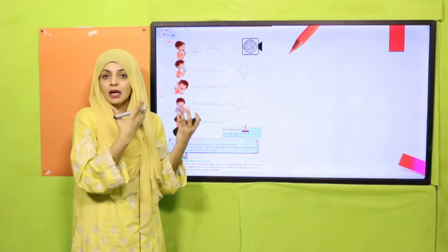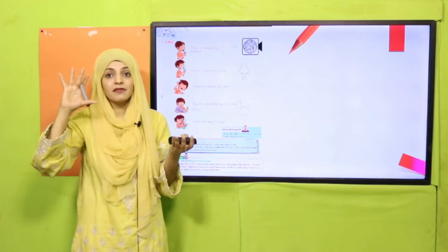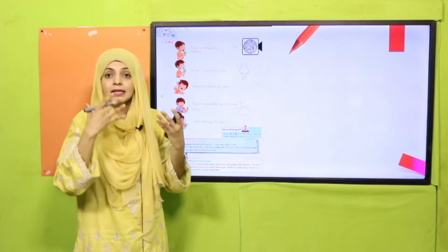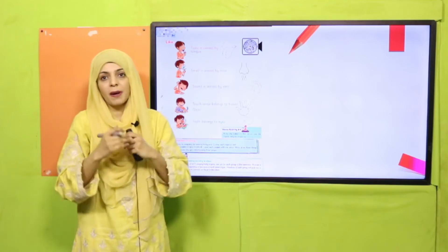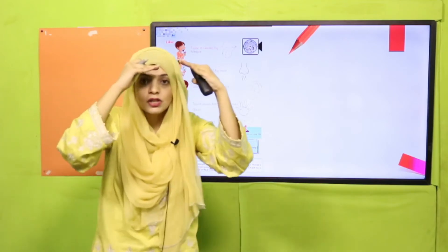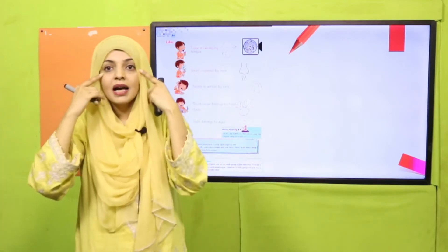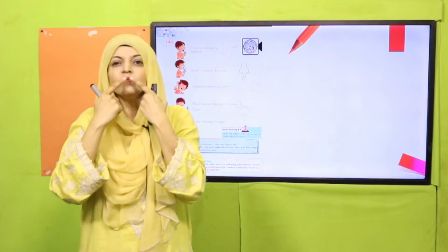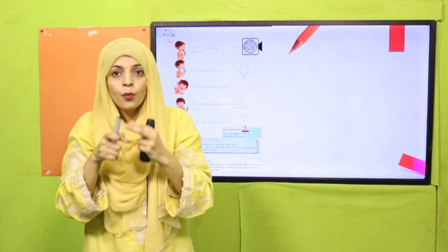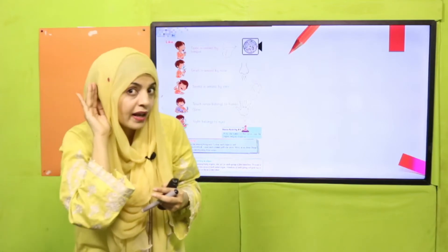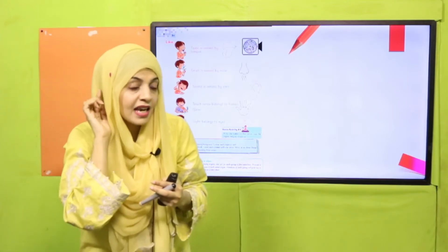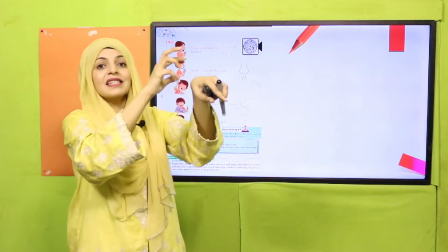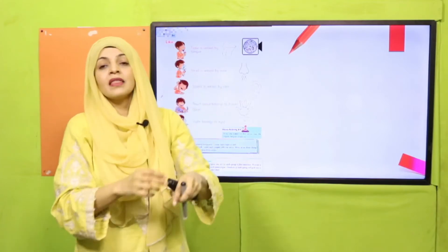On page number 84 we discussed the five senses and which body part each sense belongs to. Where is the sense of sight? — Eyes. Where is the sense of smell? — Nose. Where is the sense of hearing? — Ears. Where is the sense of touch? — Skin.